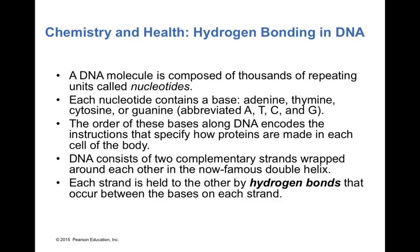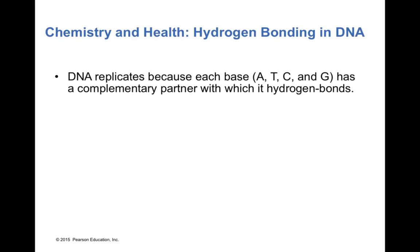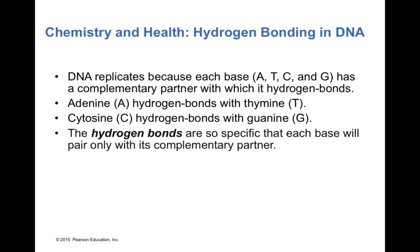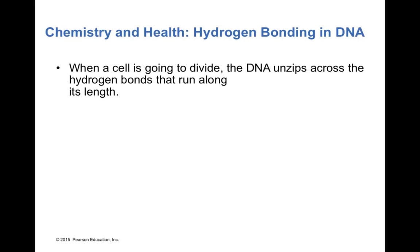The atoms involved in DNA's hydrogen bonds are hydrogen, oxygen, and nitrogen — fluorine is not present in DNA. The base pairing is specific: adenine hydrogen bonds with thymine (A–T), and cytosine hydrogen bonds with guanine (C–G). When a cell divides, the DNA unzips by breaking those hydrogen bonds. New complementary bases then add along each half, forming new hydrogen bonds with their complements, resulting in two identical copies of the original DNA.